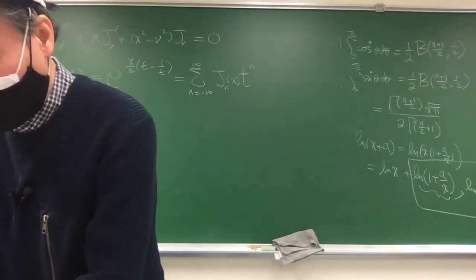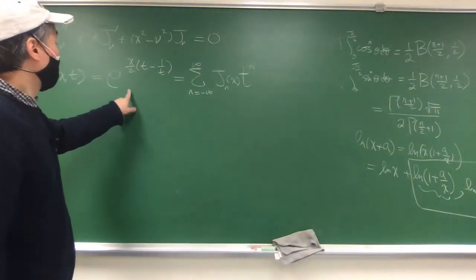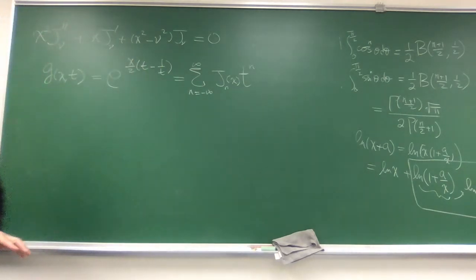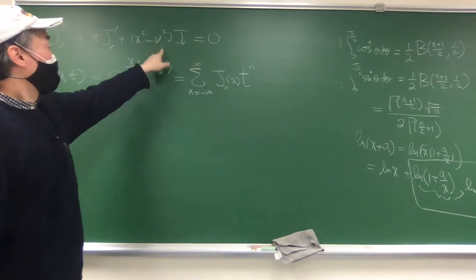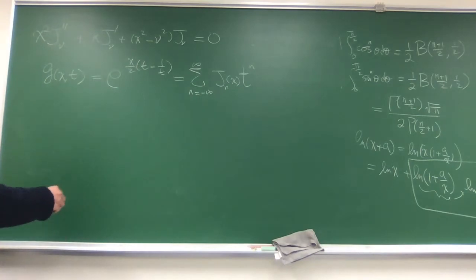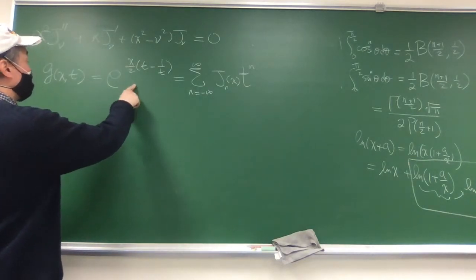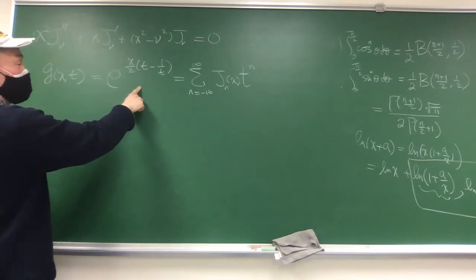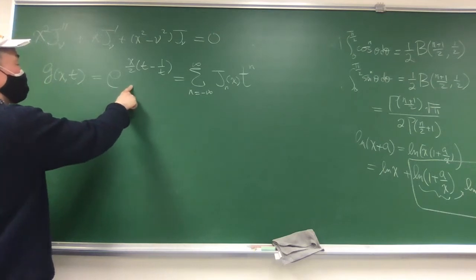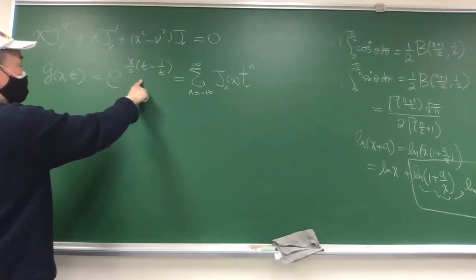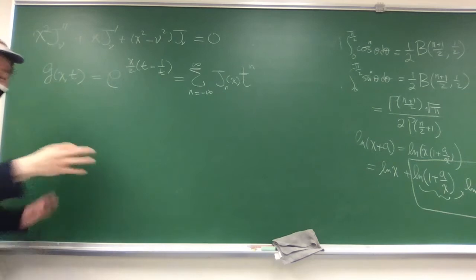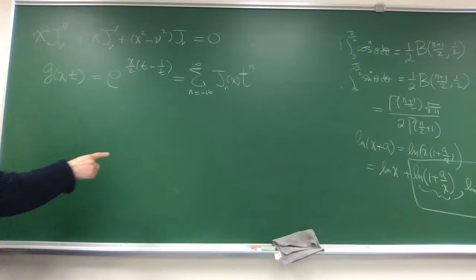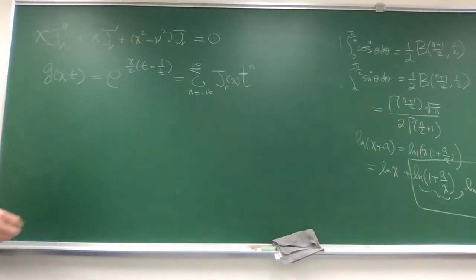The first step is to get a series expansion using the generating formula and compare that with what we got in chapter 7. If the two are the same, then you know that this expansion will give you the correct solution for the Bessel equation. That's the point. The idea is that to get a series expansion, we can expand this function because this is just an exponential function.